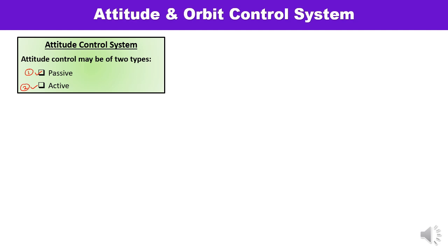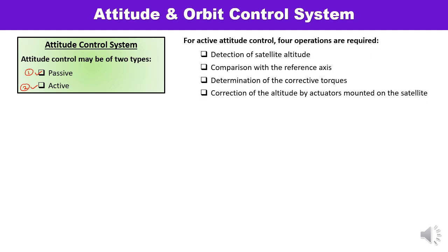The overall attitude control operation can be divided into four steps: first, detection of the satellite attitude; second, comparing the data received from the sensor on the satellite body with the reference; third, calculating how much corrective torque is required; and fourth, correction of attitude using activators mounted on the body of the satellite. Correction may be required along any axis — the three axes about which motions can be governed are roll, yaw, and pitch.